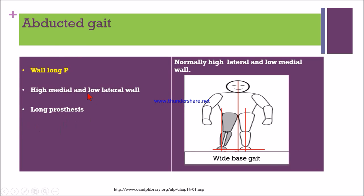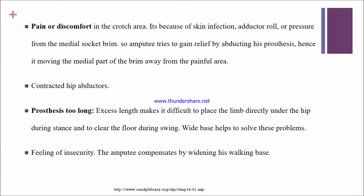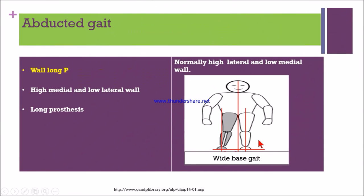If the prosthesis is long and the medial wall is high with a low lateral wall, the patient has to abduct their limb to clear the ground. If the patient has discomfort or pain in the crotch area — possibly due to skin infections or an adductor roll — there is pressure at the medial socket, and the amputee tries to relieve it by abducting the prosthesis, moving away from the painful area. This is visible in the diagram.